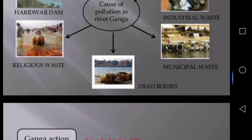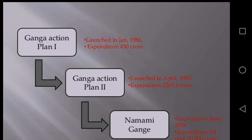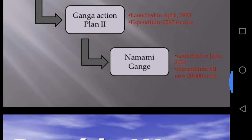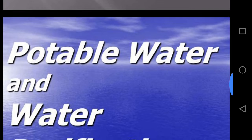For restoring the past glory of the Ganga, the government launched several action plans. Ganga Action Plan One was launched in January 1986, Ganga Action Plan Two was launched in April 1993, and Namami Ganga was launched in June 2014. The aim of these plans is to restore the glory of the Ganga and to save it.